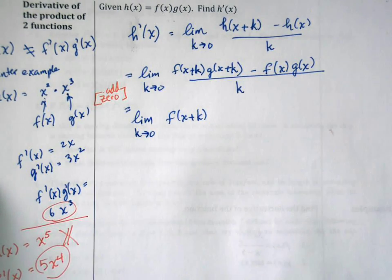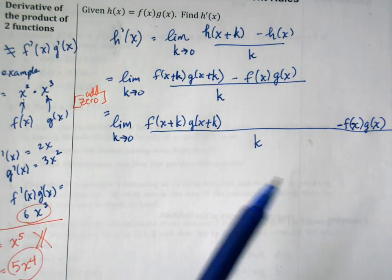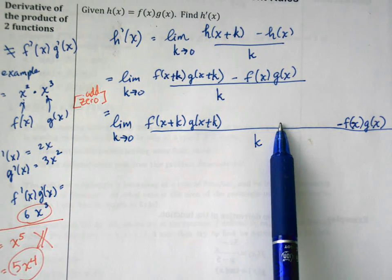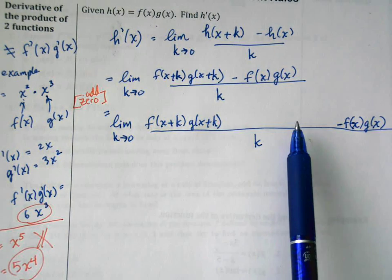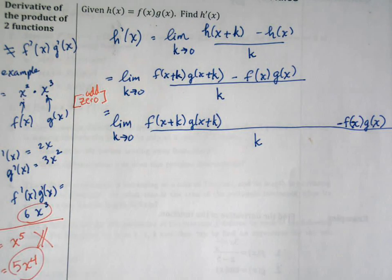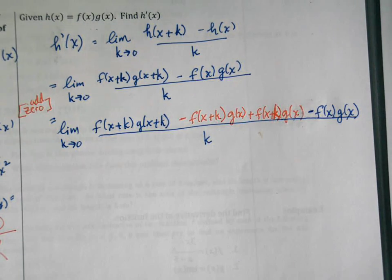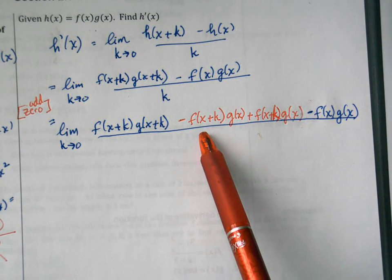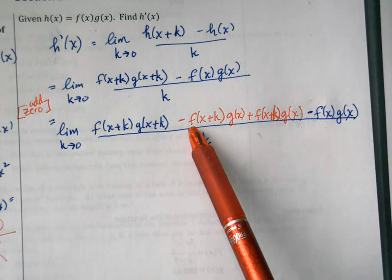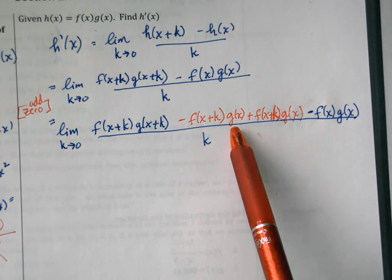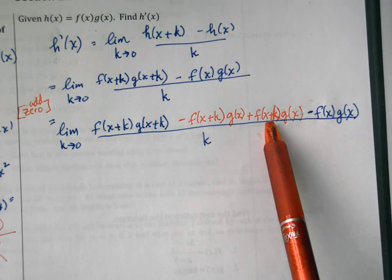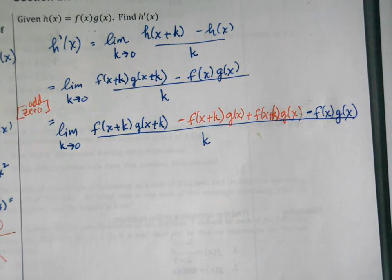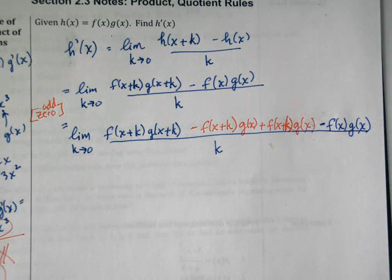I'm just writing down exactly what I had before. I took what's on the previous line, copied it down, and I'm going to leave this part in the middle here for me to add zero. I'm going to add zero this way. You can see here the part that I wrote in red is exactly equal to zero: minus f of x plus k times g of x plus f of x plus k times g of x. So the part in red that I wrote here is exactly equal to zero.